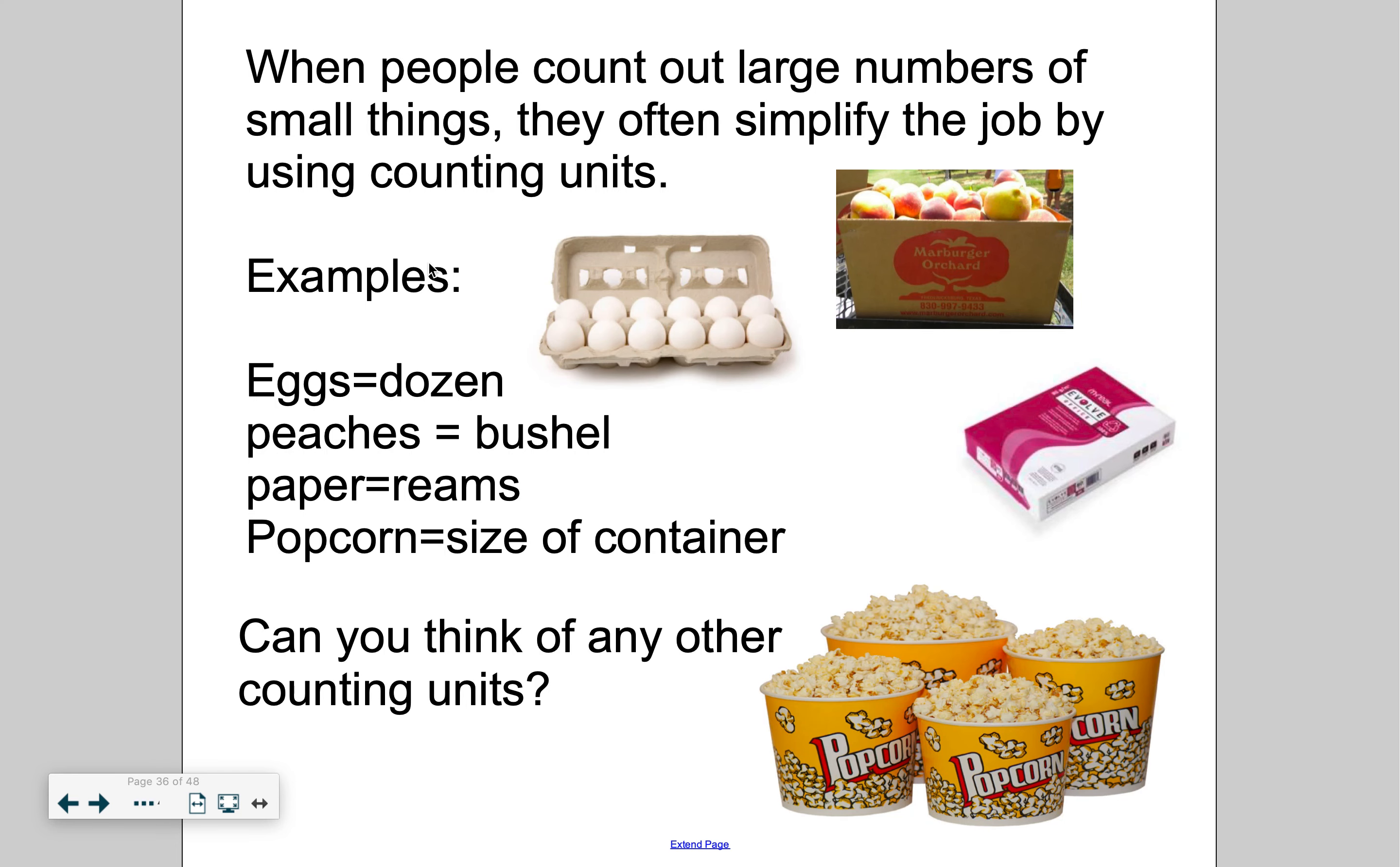So usually when we count out large numbers of small things, we tend to use a unit or a counting unit. Like for eggs, we use a dozen. For peaches or apples, a bushel. Paper with reams, so a ream is 500 sheets of paper. Popcorn size - you don't walk into a movie theater and say I'll take the 500 kernel bag. Who wants to count out 500 popcorn kernels? Instead, we just use sizes of containers. And so I'm sure you can think of some other counting units that you may use in everyday life.